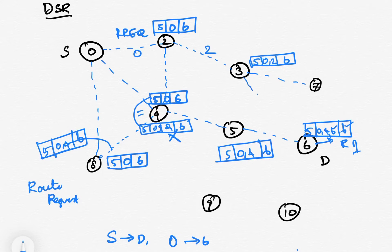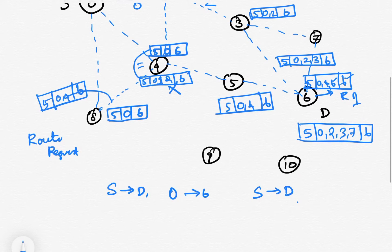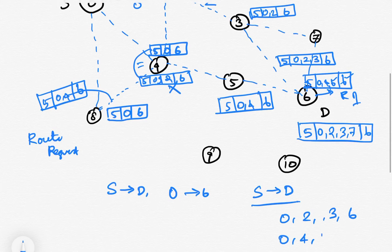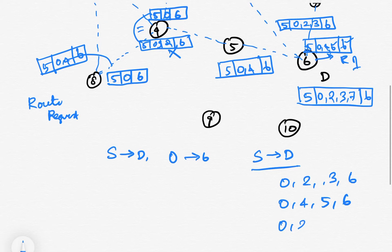Node 3 and 6 are also in range with each other, so the packet reaches through path 5, 0, 2, 3, 6. Similarly, node 7 will send a packet with path 5, 0, 2, 3, 7, 6. When all these packets are received, node D will have three routes: 0, 2, 3, 6; 0, 4, 5, 6; and 0, 2, 3, 7, 6.